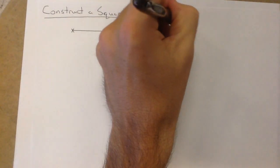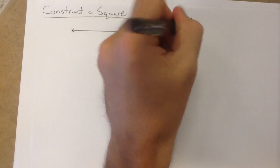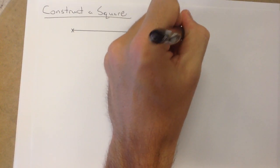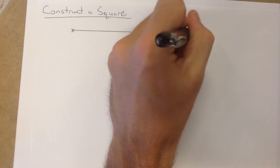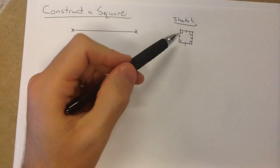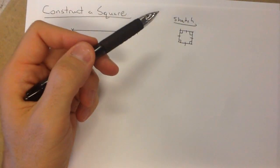If we just get a little sketch off to the side of what we want, we should know a square means all the sides are the same, and the angles are all 90 degrees and the sides are perpendicular.